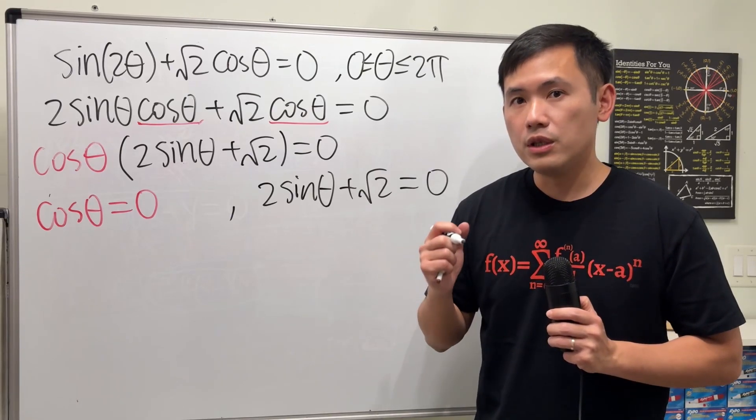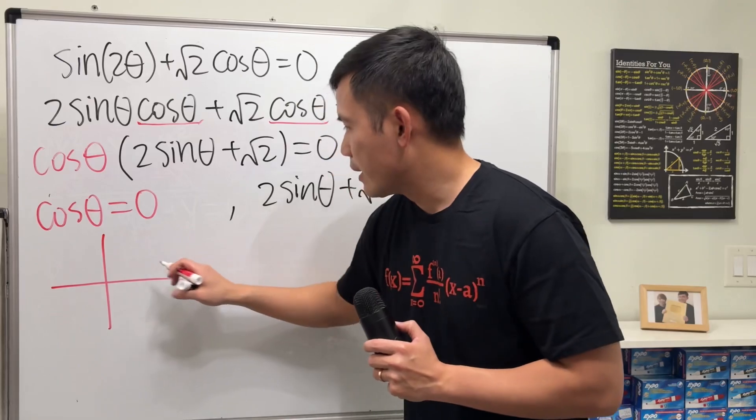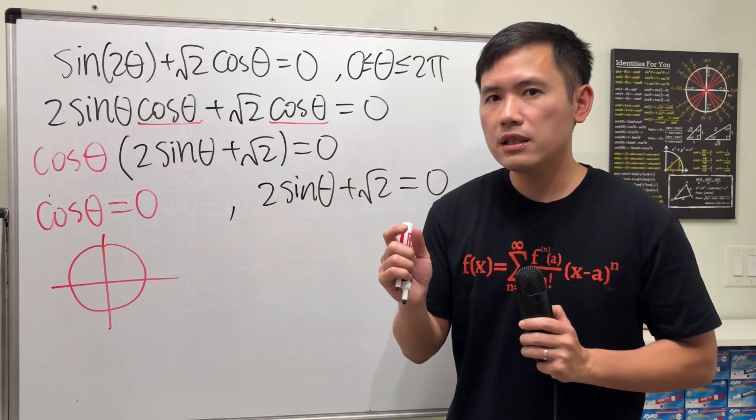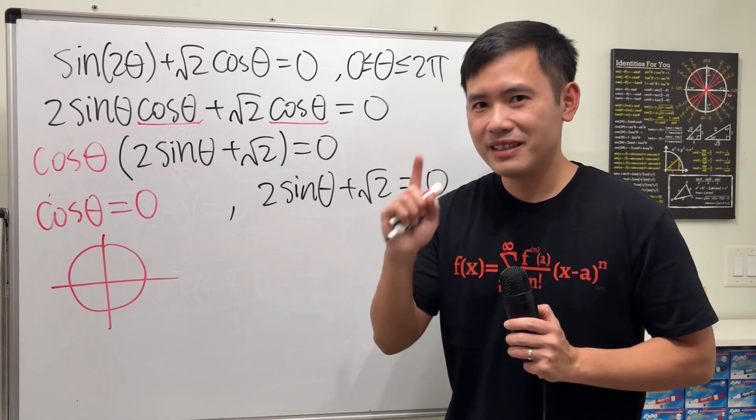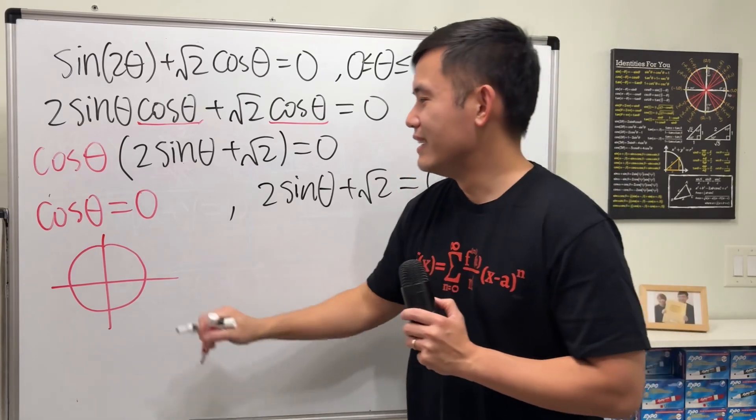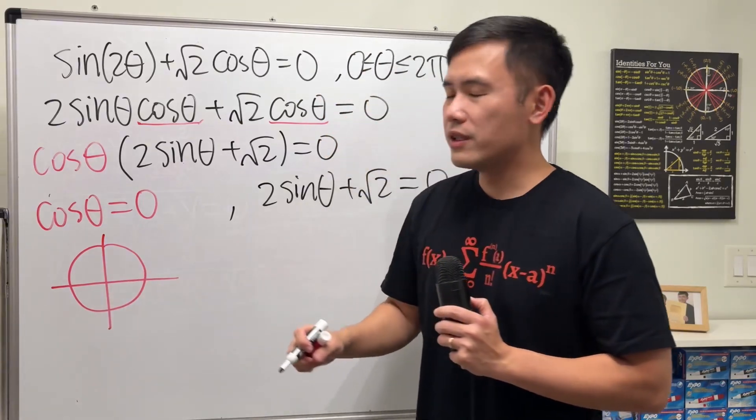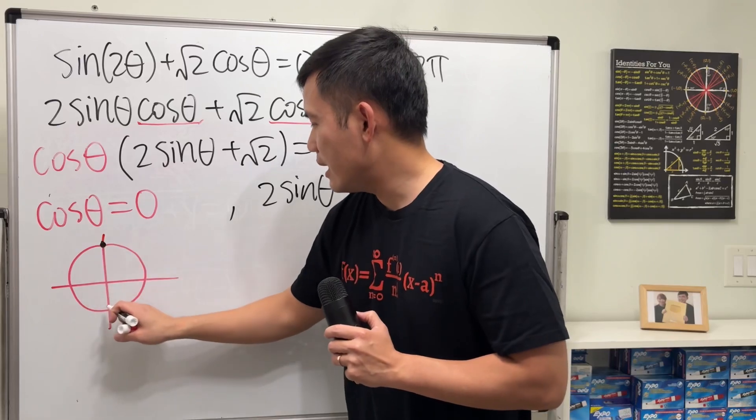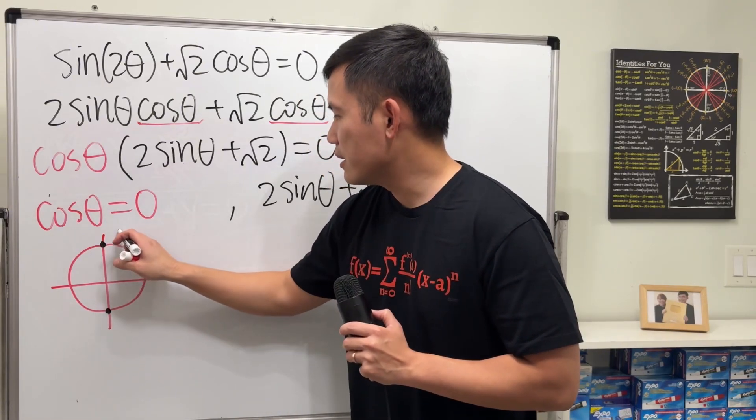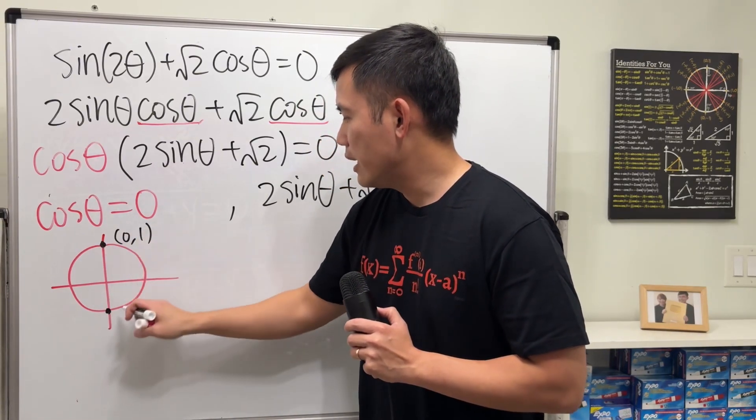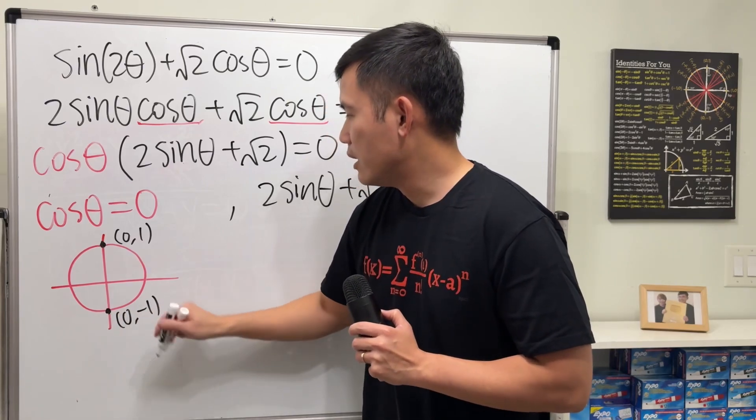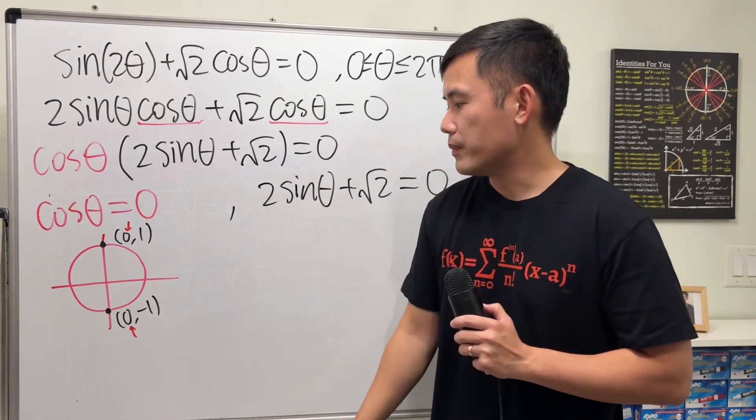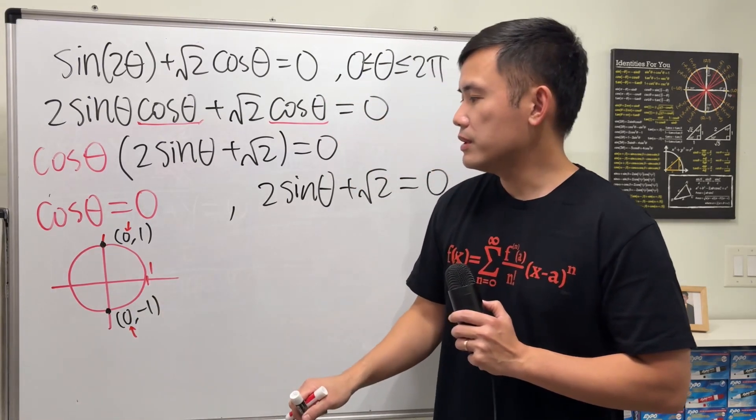I'm going to refer to the unit circle. And on the unit circle, cosine theta is the what value? The x or the y? The x. So where is the x coordinate 0 on the unit circle? The answer is right here and right here. The coordinate here is 0 comma 1 and the coordinate here is 0 comma negative 1. And the important thing is that cosine is equal to 0. So this is how you utilize the unit circle.